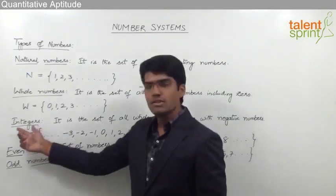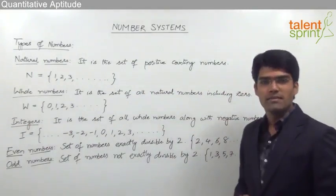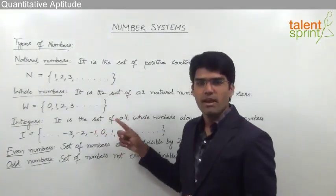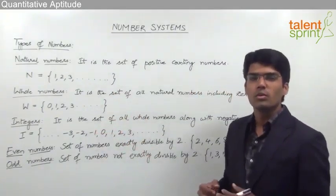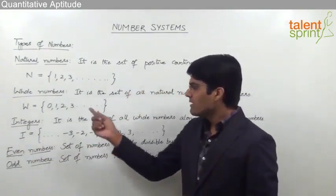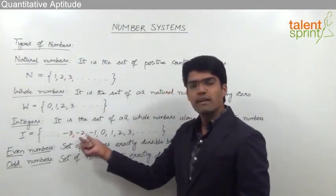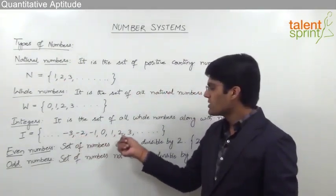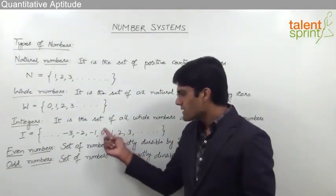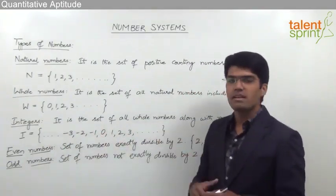The next one is integers. Integers is a set of all whole numbers along with the negative numbers. In the previous two cases we did not have any negative numbers — all the numbers were positive. But integers also include negative numbers along with the whole numbers. Generally denoted by the letter I, this set consists of numbers starting from negative infinity, then coming up like minus 3, minus 2, minus 1, 0, and then positive integers 1, 2, 3 and so on up to infinity.